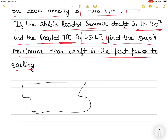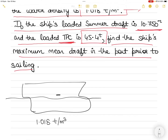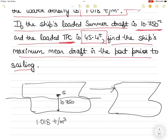The vessel is currently floating in water of density 1.018 tons per cubic meter. The maximum summer draft is 10.750 meters — that is the maximum draft mark. So if you load up to that water level, the summer draft mark is 10.750 meters. How much can you load in this water if you then have to proceed to a port where the density is 1.025 tons per cubic meter?